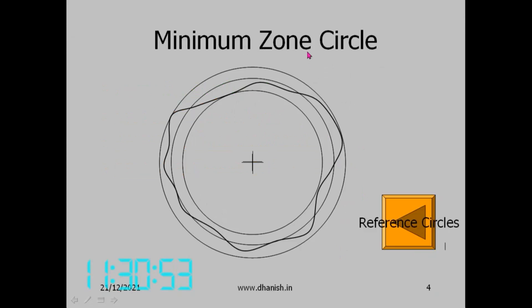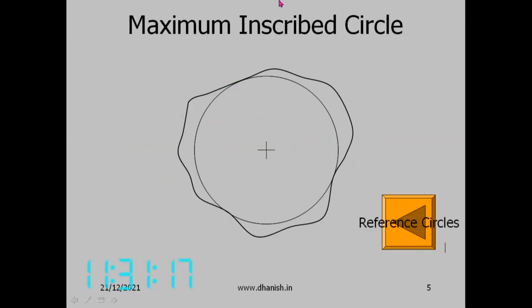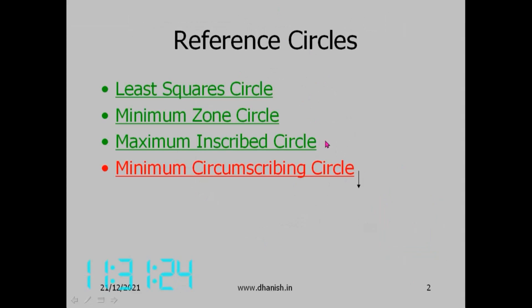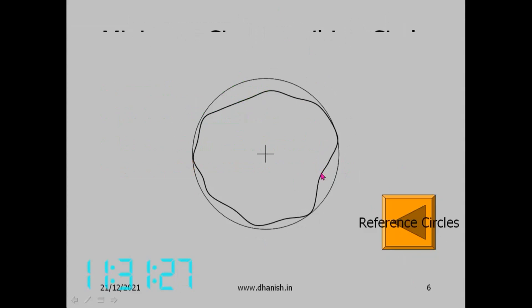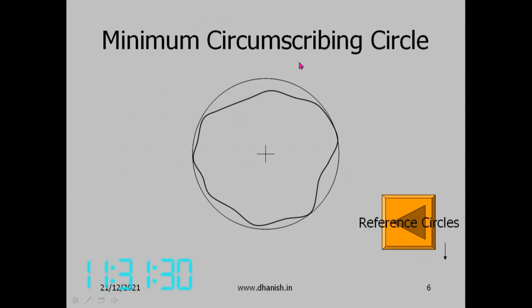The minimum zone circle consists of two concentric circles where both circles are concentric such that the distance between the two is minimum — that is, the roundness error is minimum. The maximum inscribed circle is the biggest circle that can be inscribed through the measured points. The minimum circumscribing circle is the smallest circle which will enclose all the points. So we have four different reference circles.